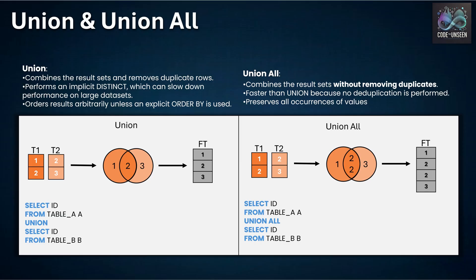Don't make that mistake. Now let's understand union and how unions differ from joins. Both are used to combine data from multiple tables but work in completely different ways. Joins combine columns from multiple tables based on related columns — they work horizontally, adding columns. Union combines rows from multiple SELECT queries into a single result — it works vertically, adding rows.